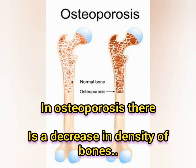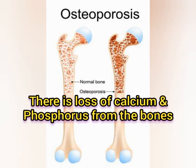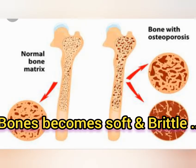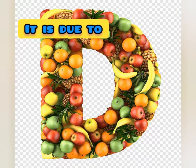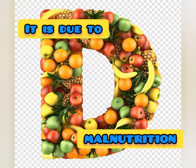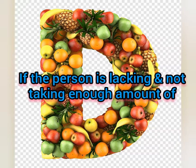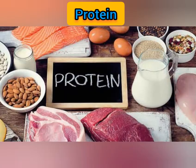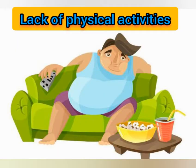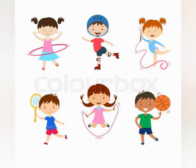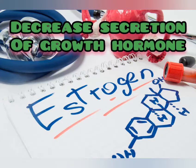There is a loss of calcium and phosphorus from the bones, and the bones become soft and brittle. Osteoporosis occurs due to malnutrition — if a person is not taking enough proteins and vitamin C — and also due to lack of physical activities like running, walking, playing outdoor activities, and deficiency of the estrogen hormone.